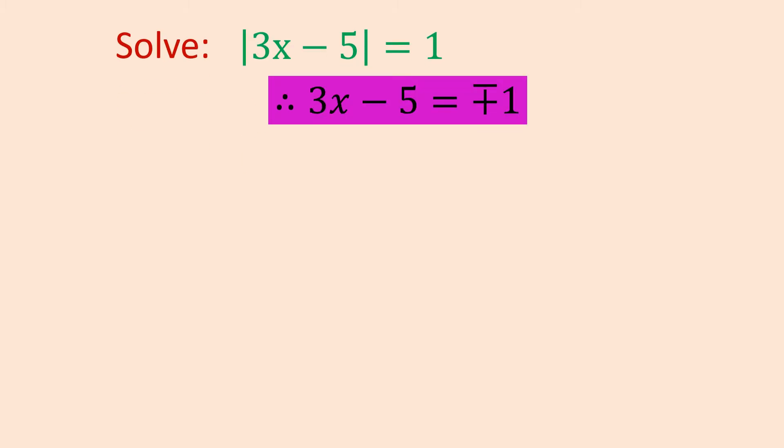As soon as I remove the modulus sign, the binomial which is inside it will come as it is without changing the sign. So 3x minus 5 equals to the other side when there is no modulus sign, so it will become plus minus 1.